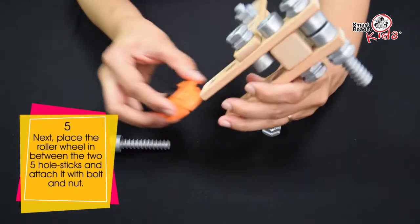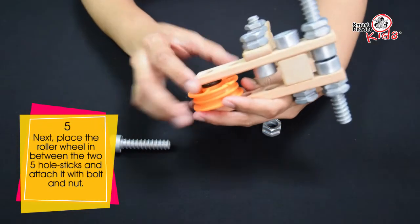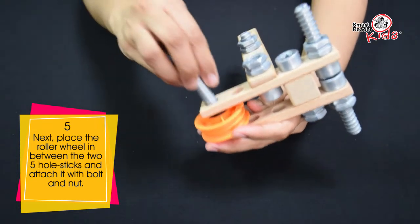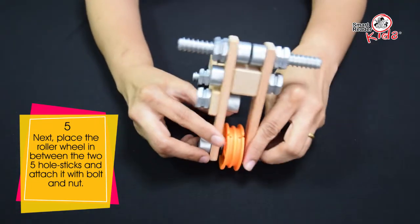Next, place the roller wheel in between the 2 5-hole sticks and attach it with bolt and nut.